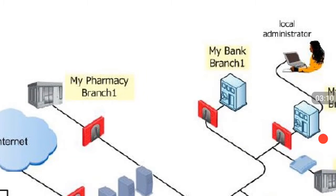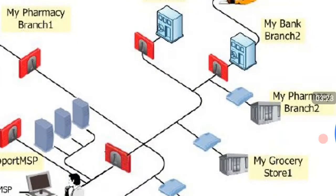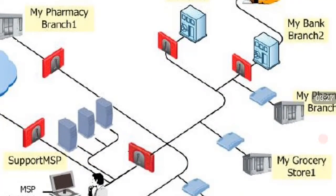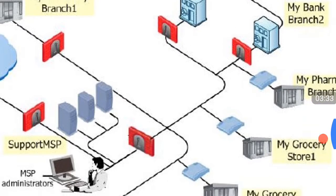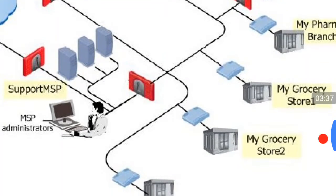Suppose he has to implement some policy for Pharma — he will log into the Pharma gateway, shown in red color, and do the implementation. Then if he has to do the same thing for Bank Branch One, Branch Two, and Pharma Two, he has to go to each and every firewall, log in, search for the IP addresses, and implement the policy. But what will happen if there are not just five firewalls — what if there are a hundred firewalls?